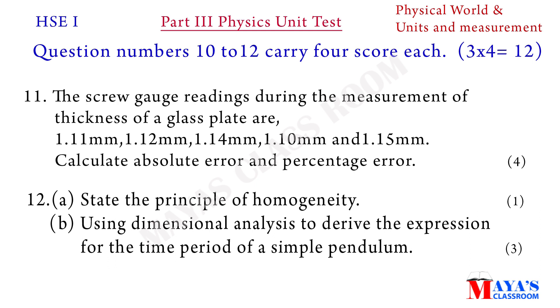Eleventh question: the screw gauge readings during the measurement of thickness of a glass plate are 1.11 millimeter, 1.12 millimeter, 1.14 millimeter, 1.10 millimeter, and 1.15 millimeter. Calculate absolute error and percentage error.